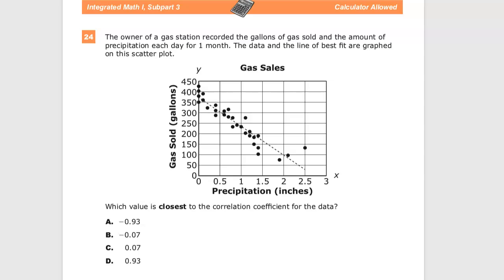The Integrated Math 1 practice test for TN Ready, question number 24 on the 2019-20 test. This is a question that's been on old tests, but the last version that I filmed for this was, the audio is hot garbage, so I figured I'd do it again. The owner of a gas station recorded the gallons of gas sold in the amount of precipitation each day for one month. The data and the line of best fit are graphed on this scatter plot, and we want to know the correlation coefficient.